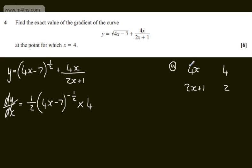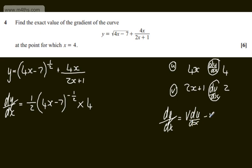So this now is u, this is du dx, we have v and we have dv dx. Using the quotient rule, we can say that dy by dx will be equal to v du dx minus u dv dx, all over v squared.